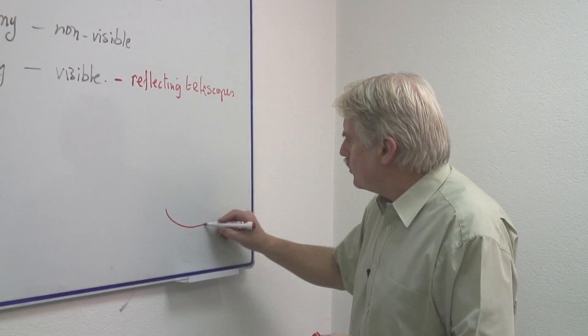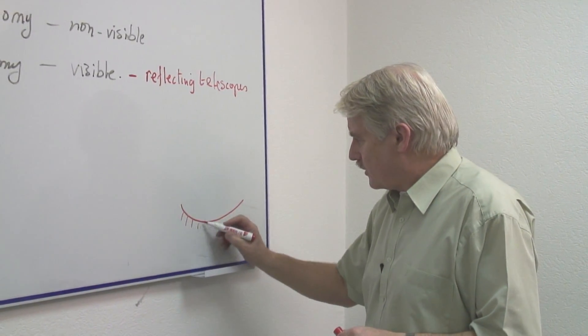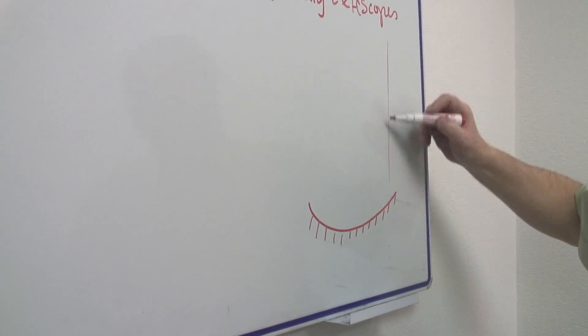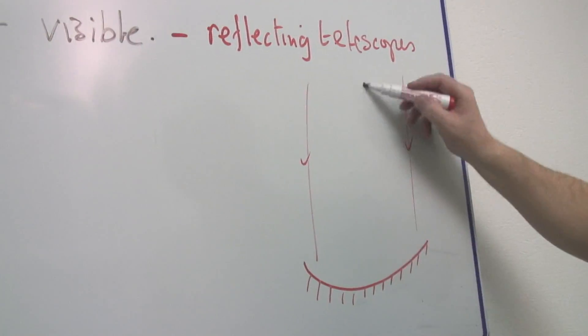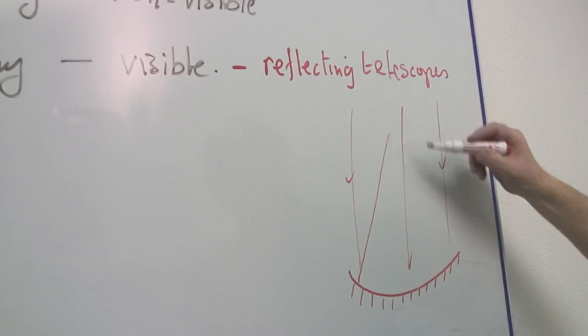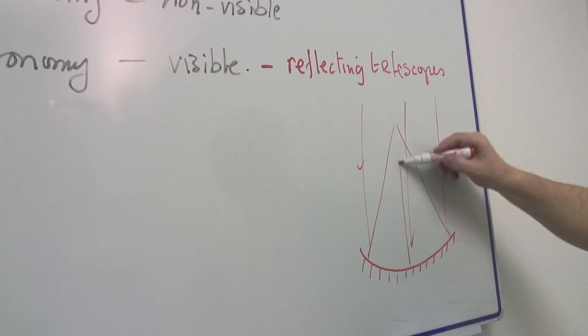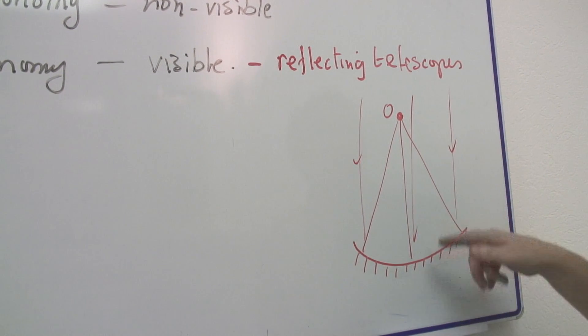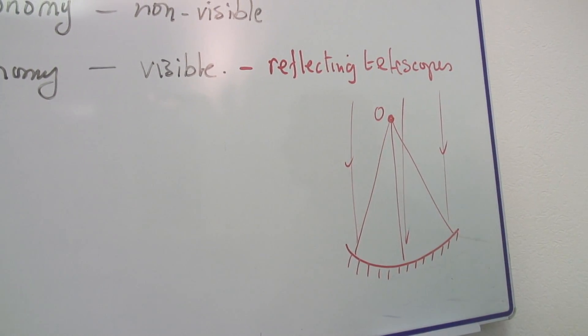So you will have a huge mirror, curved of course because it has to focus light. The light will come in from a distance and all of this light will focus to an observation point here, and that is where you will observe what you can see in the distance.